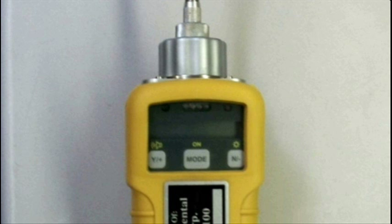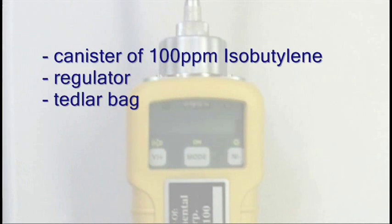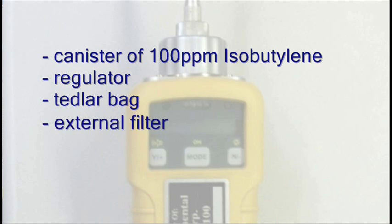For calibration, we will need the following supplies: a canister of isobutylene at a concentration of 100 ppm, a regulator, and a Tedlar bag. Also, please remember to always use an external filter whenever using a PID.